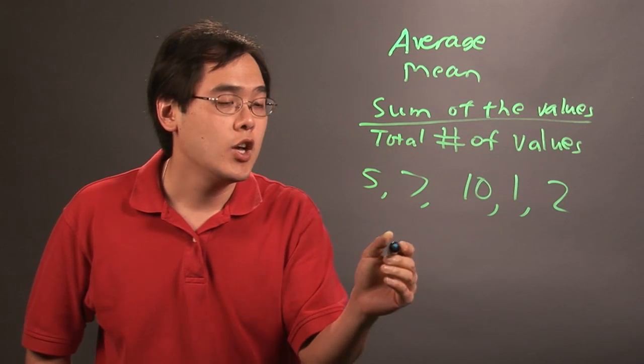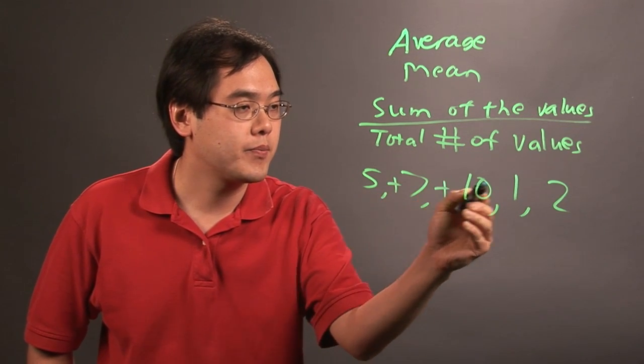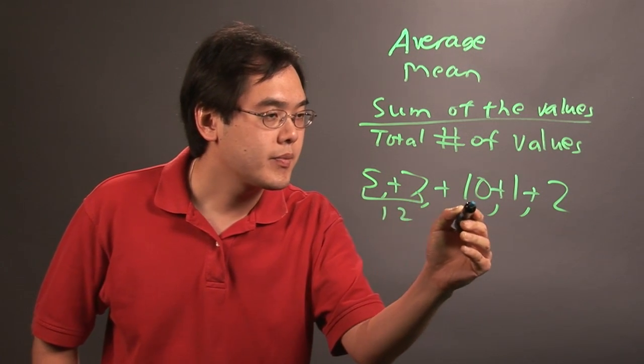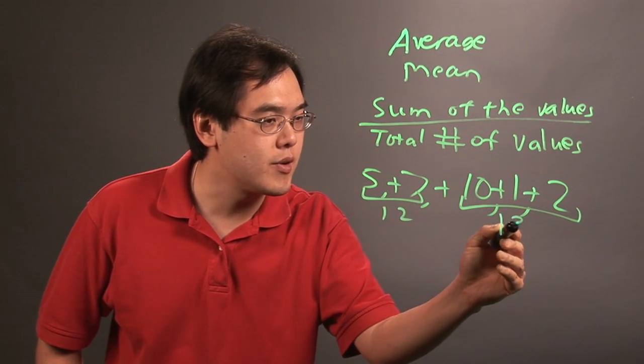You want to find the average of that. What you want to do is you want to add all these figures together. So 5 plus 7 is 12. 10 plus 1 plus 2, that's going to be 13.